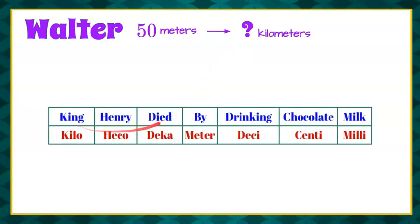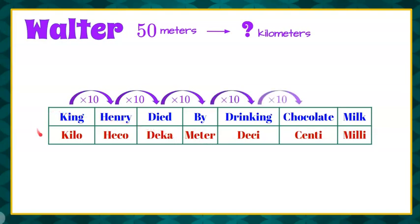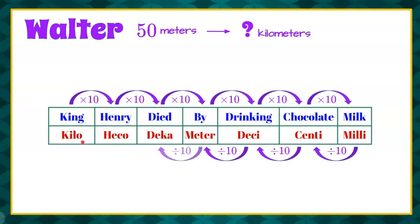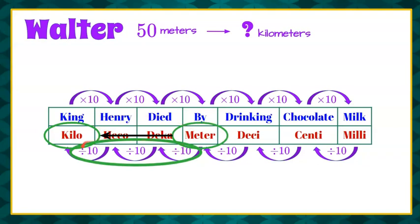So let's go back to our King Henry died by drinking chocolate milk. We're looking for meters, which is right here, and we're going to know that when we're going from kilometers to meters, we're multiplying. But when we go from meters to kilometers, we're going to divide. So we know about kilometers and meters, but we're going from meters to kilometers this time. So now we need to focus on the direction that we're going. These arrows are going this way. That's how you read this table. So now instead of multiplying by a thousand, we are going to divide by a thousand.